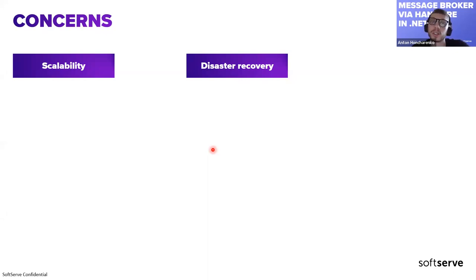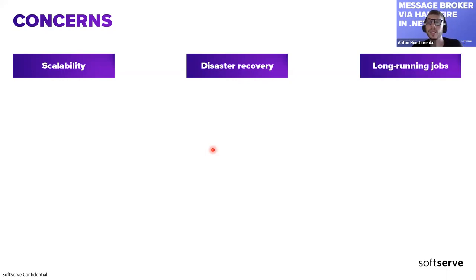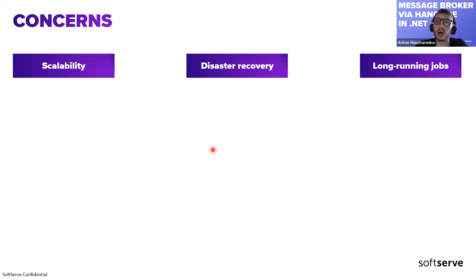Long-running jobs are also a concern — Hangfire doesn't handle them well as they're CPU and memory consuming. That's why in our example we divided the process into finding a handler and actually handling — two separate Hangfire jobs. We faced issues where finding an appropriate handler and actually handling a job together in one Hangfire job could take too long and fail if insufficient memory or CPU was available.